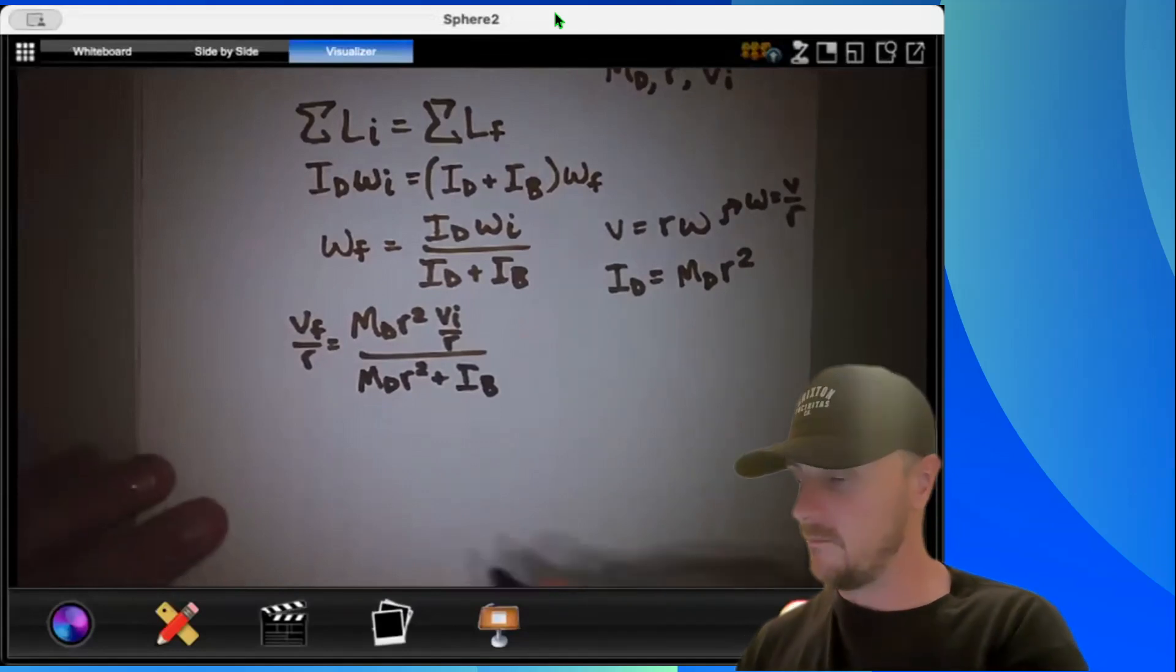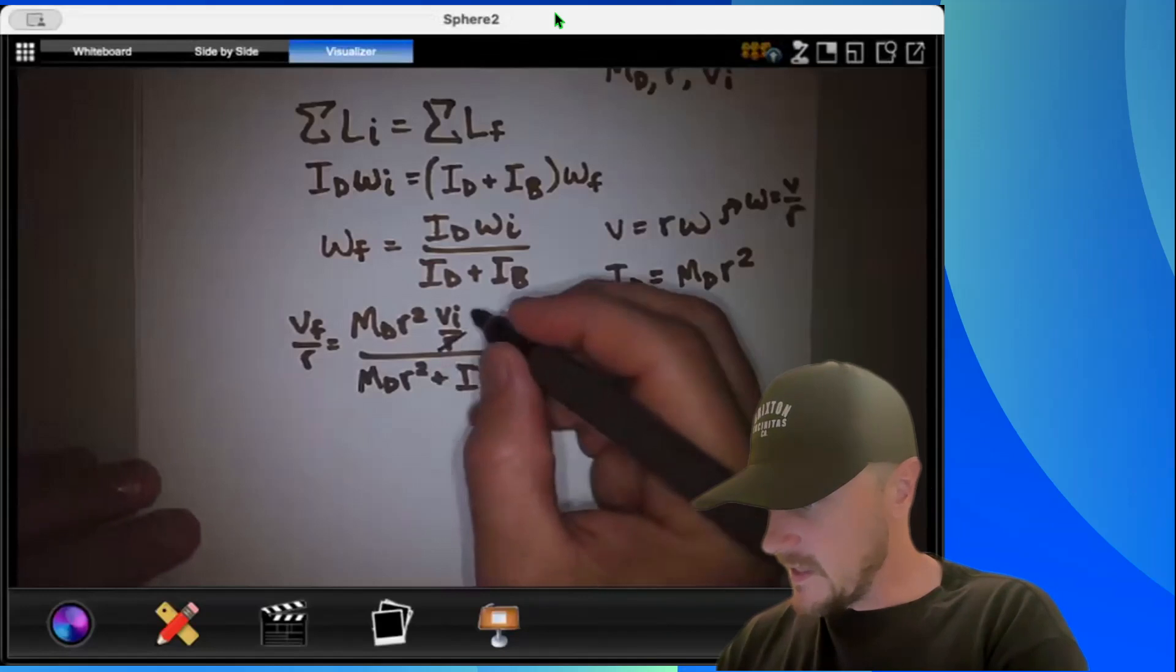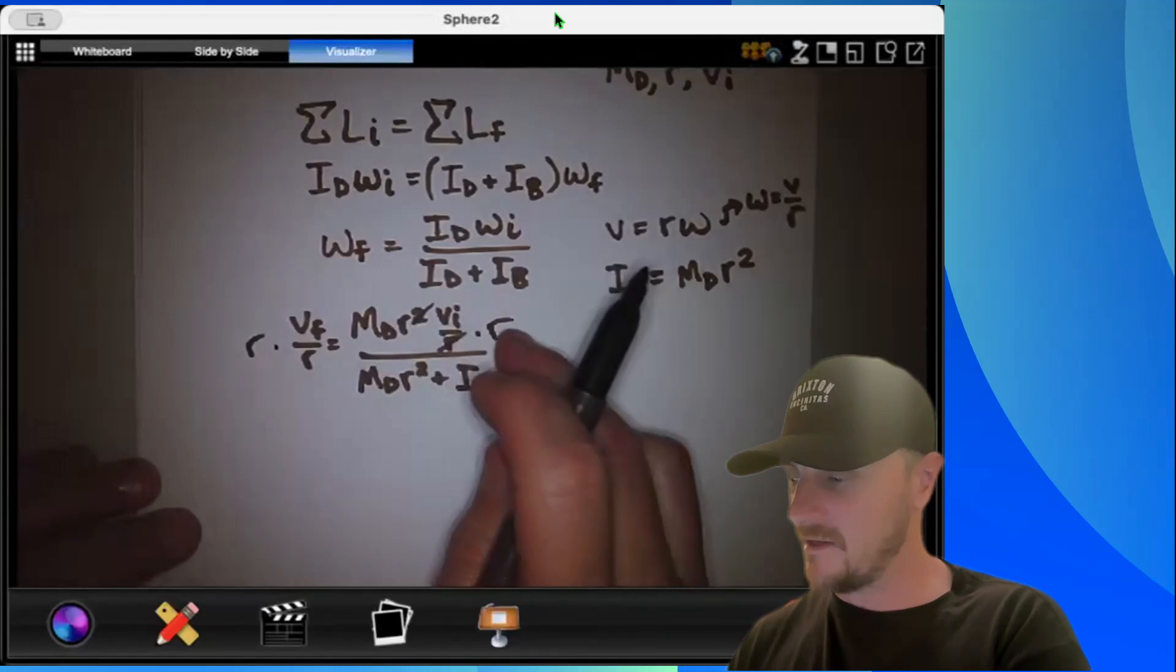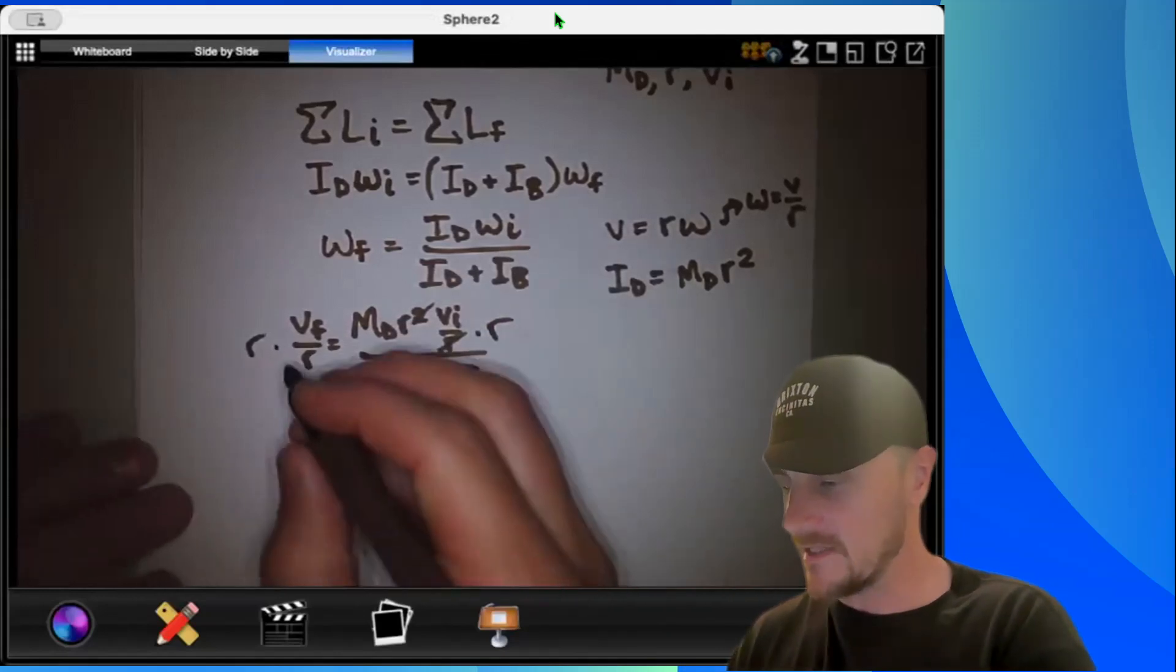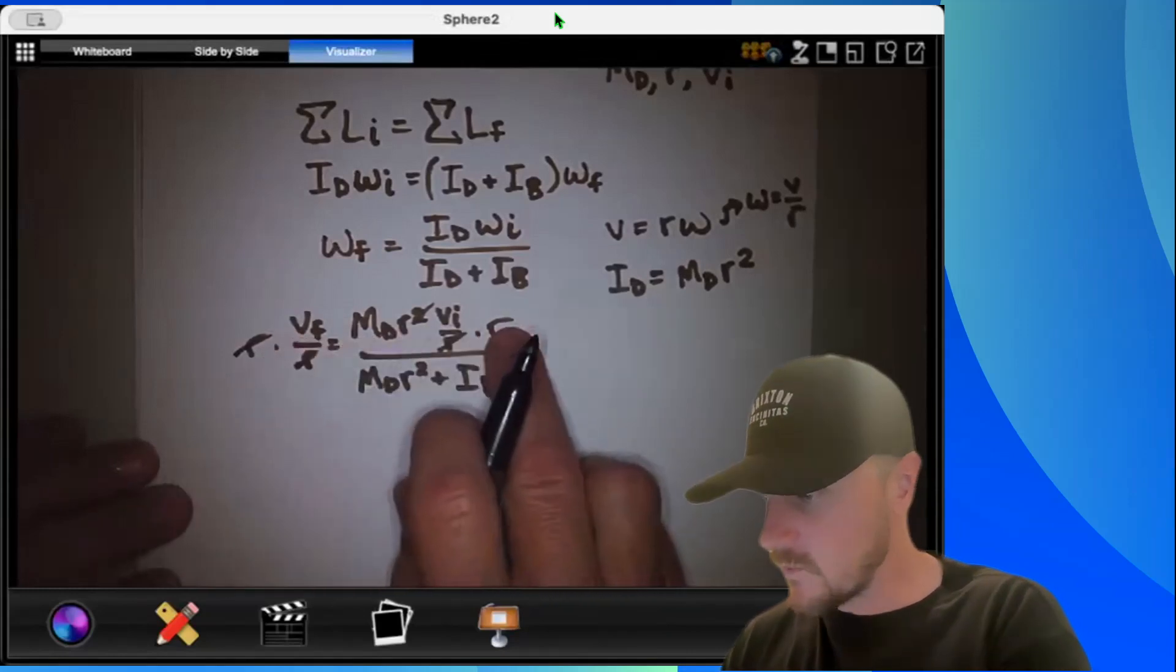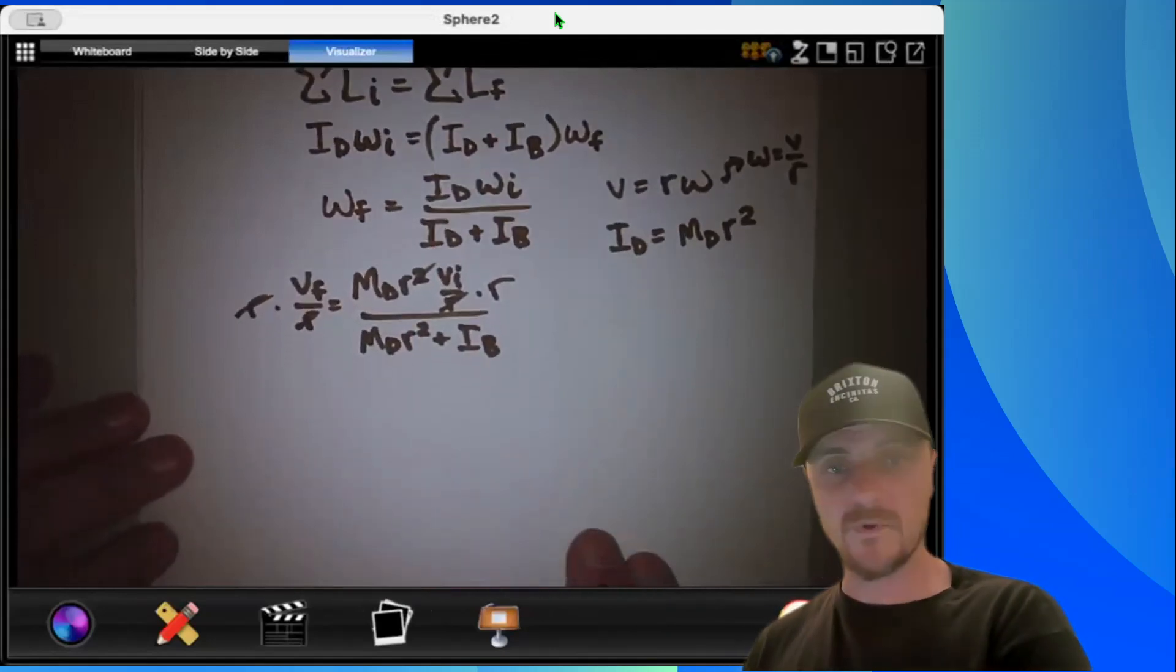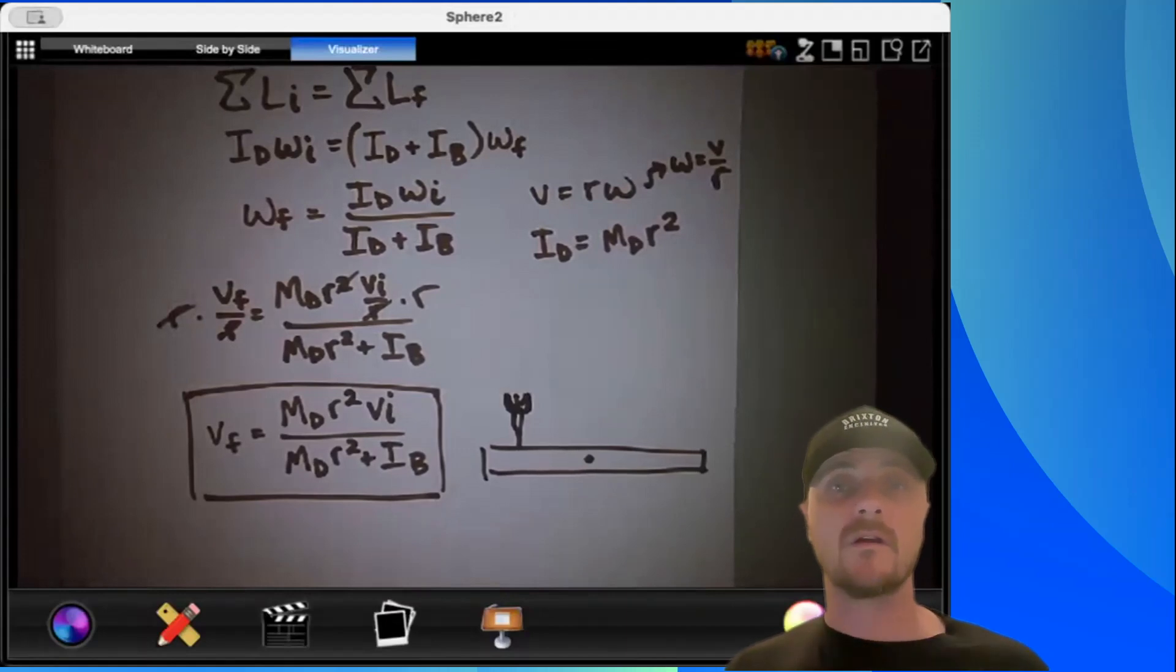So this r would cancel out with one of those r's, but then instantly I would multiply this r back over to the other side and I'd get r squared again. So maybe that was a silly way to do it, but that's what I'm going to do. So I will have vf equals md r squared times vi over md r squared plus ib, and that will be my final result. And there's our answer for A2, all done.